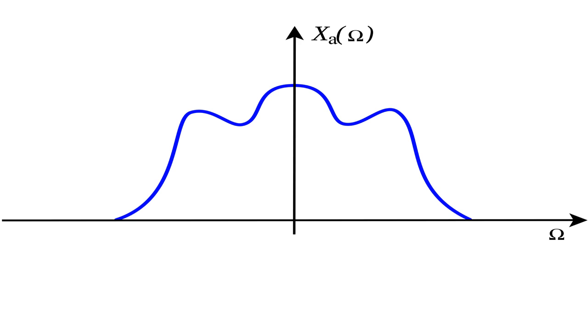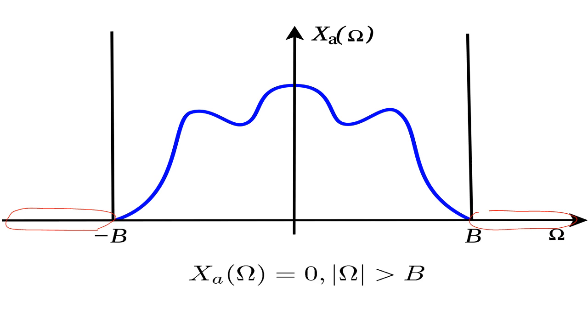Here, we see an example Fourier transform signal. I want to point out one important feature of this signal. The magnitude of the Fourier transform goes to zero beyond certain frequencies. This signal is said to be band-limited. In digital signal processing, we are concerned only with such band-limited signals. We denote the band limit with the capital letter B.